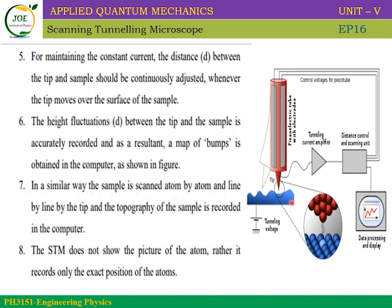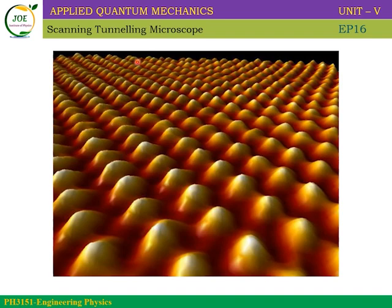The sample is scanned atom by atom. As the probe travels along the x-axis over each point, the distance is kept constant. If there is a height variation, we see a height adjustment in the output. STM does not directly show a picture of the atom, but by tracking the height of the probe as it scans, we can map the surface topography atom by atom and produce a surface image. This is the output of the scanning tunneling microscope.